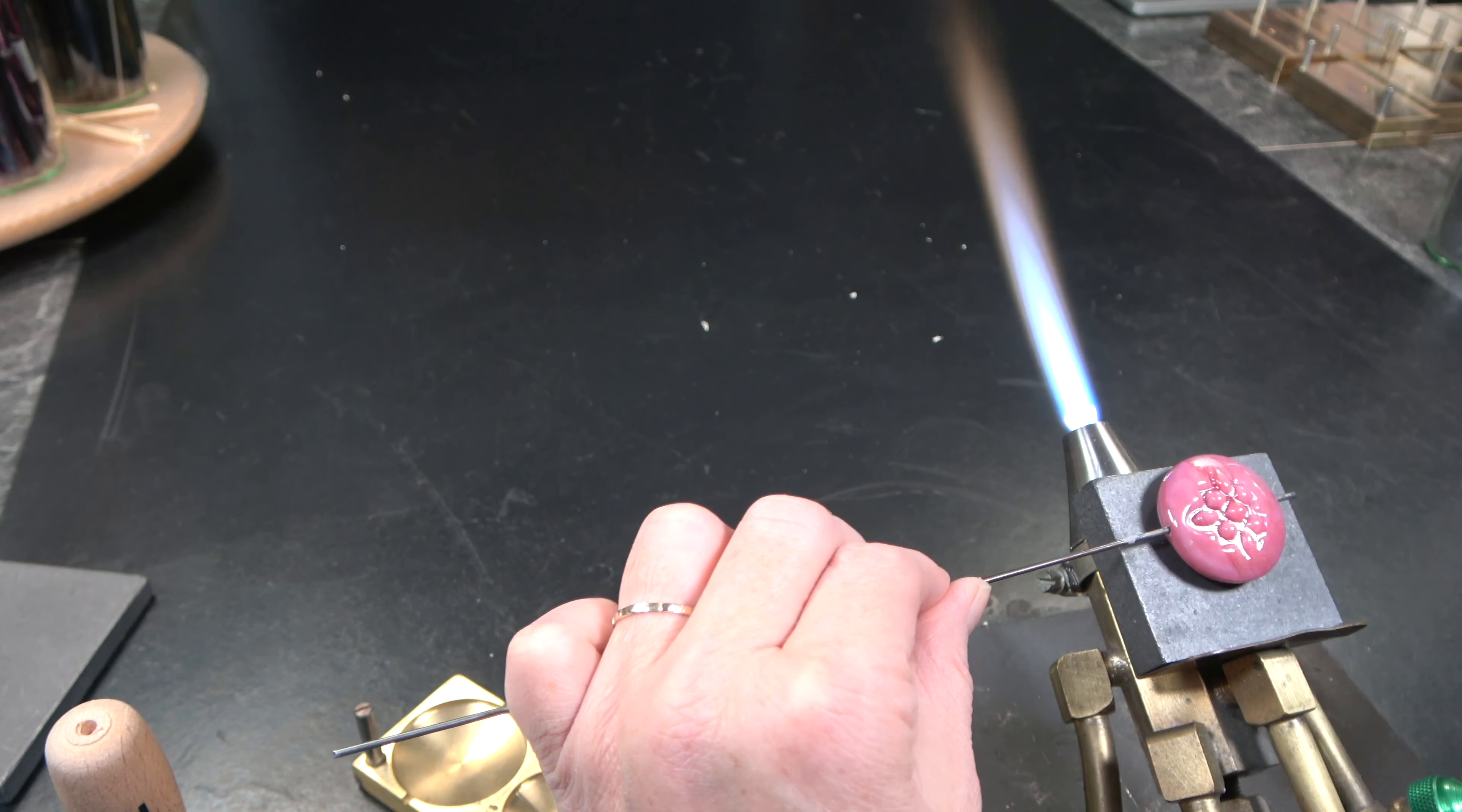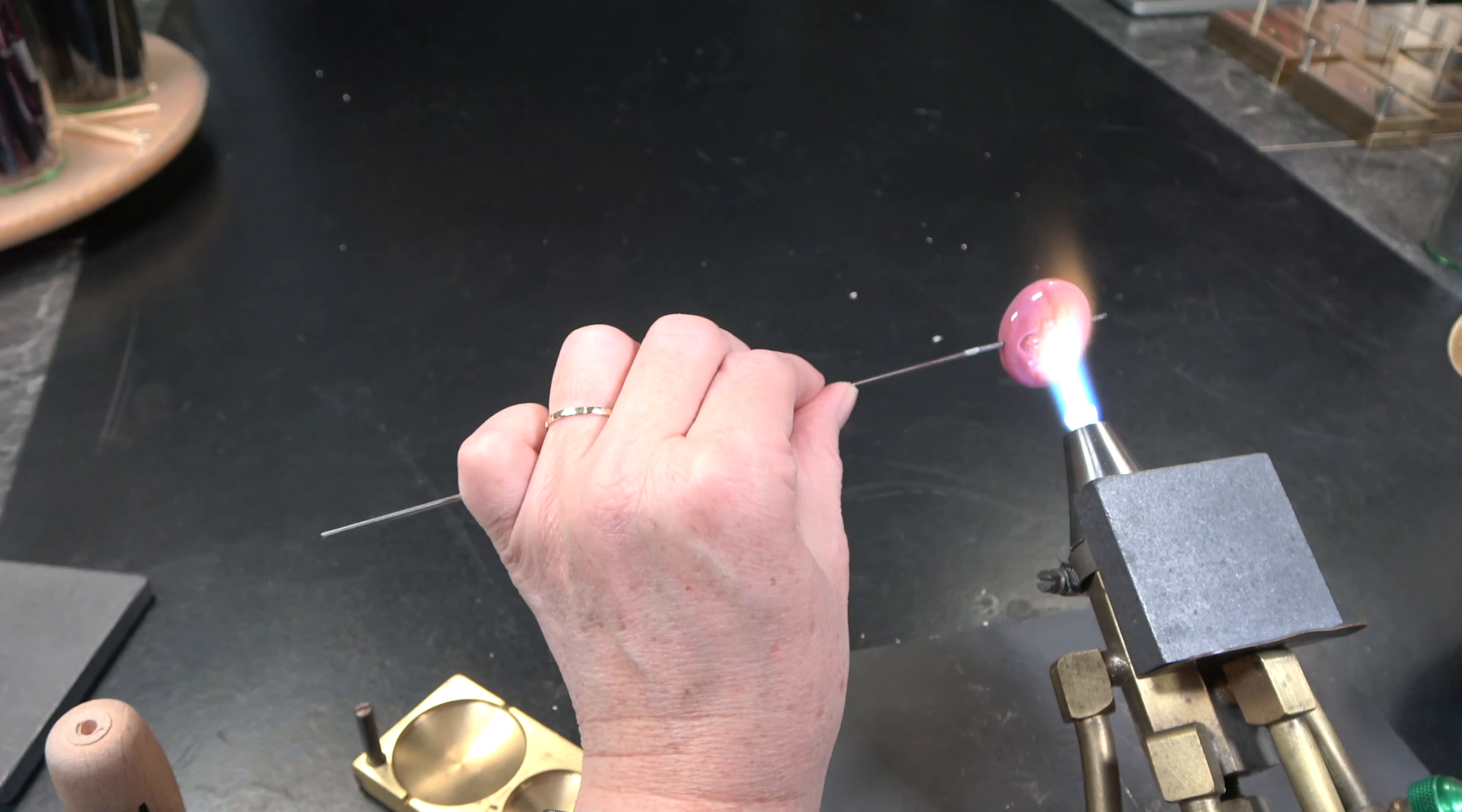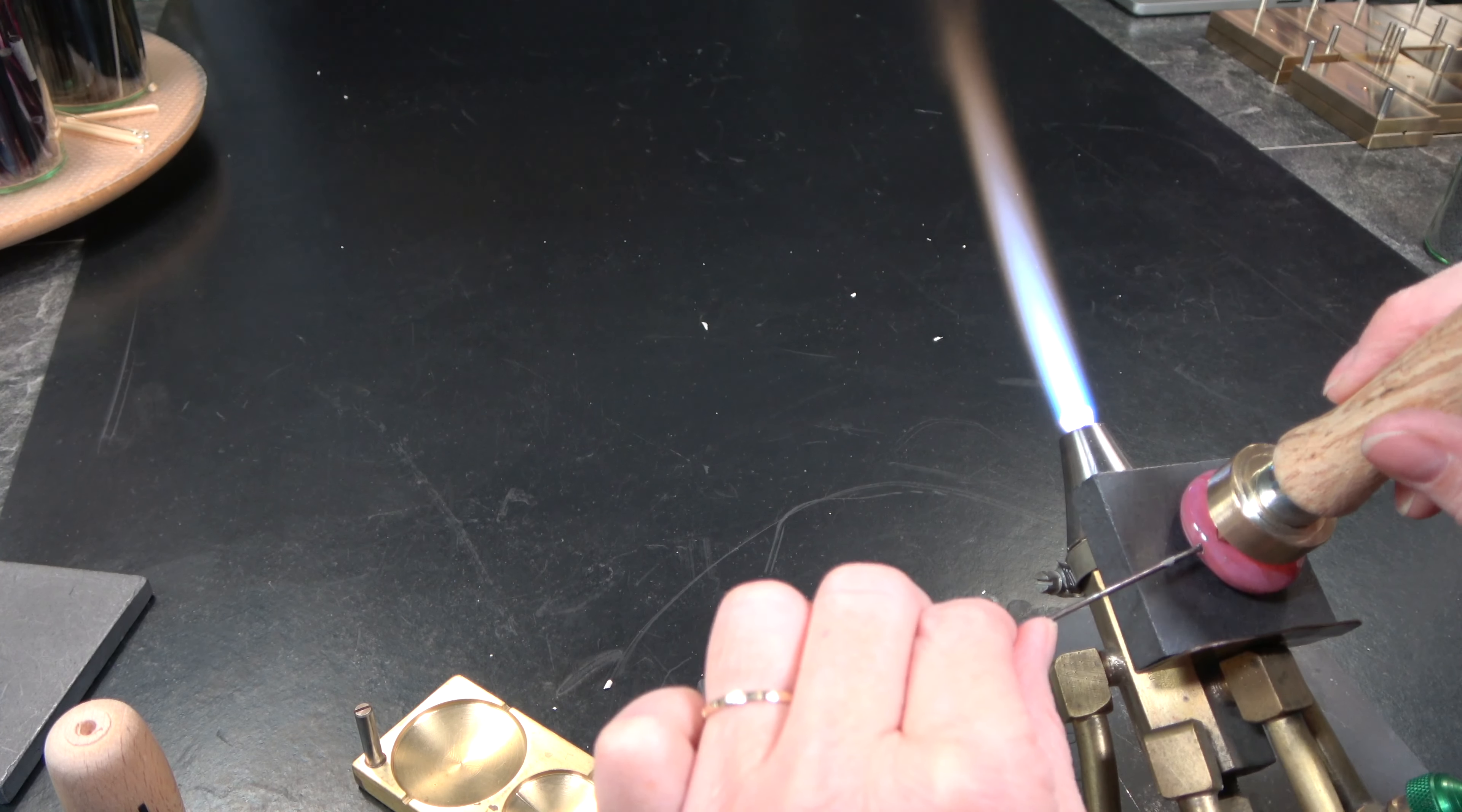We heat up one side of the bead. Now we press the stamp evenly into the bead. Since the surface is slightly curved, it can happen that the imprint isn't deep enough the first time. This is easy to fix.